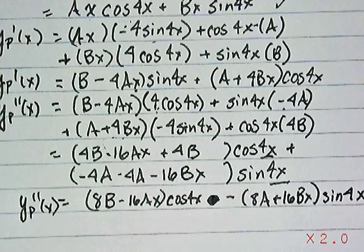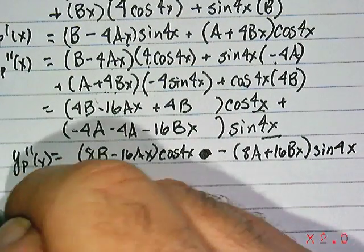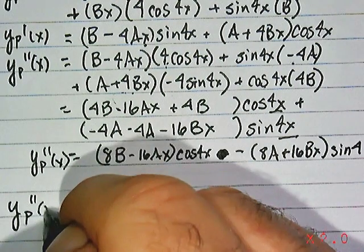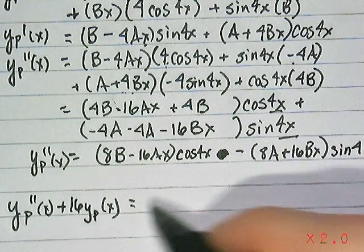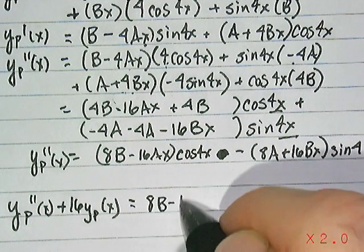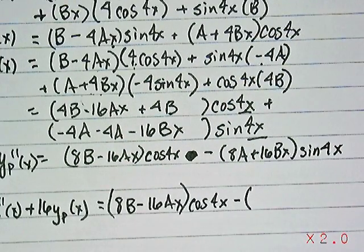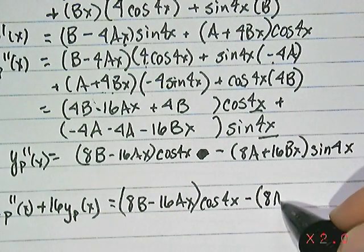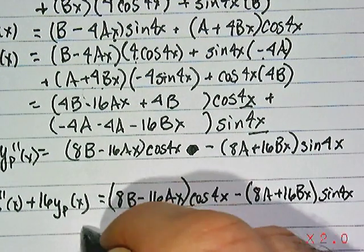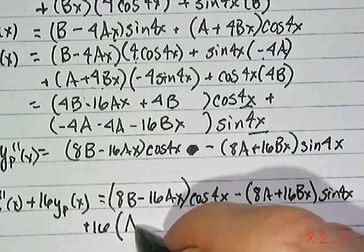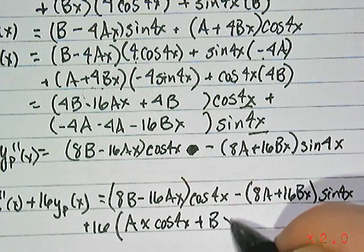So now what we need to do is plug this into the original differential equation and set it equal to 2 cosine 4x and see if we can determine what a and b would have to be. So if we do that, we'll have y double prime of x plus 16y sub p of x. In other words, we're looking at putting in a particular solution. So now let's do this. We'll just copy what we just had up here again. 8b minus 16ax. Be careful with your parentheses. Cosine 4x minus quantity 8a plus 16bx times sine 4x.